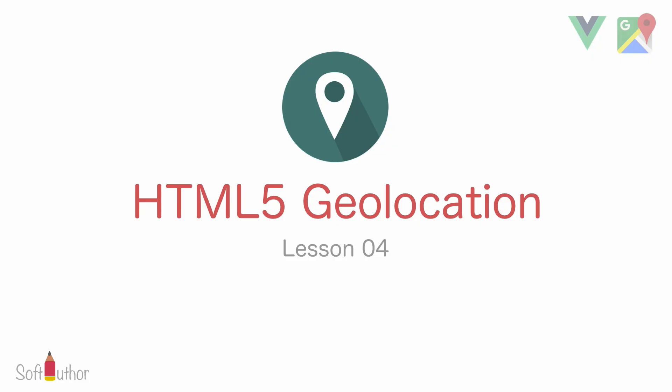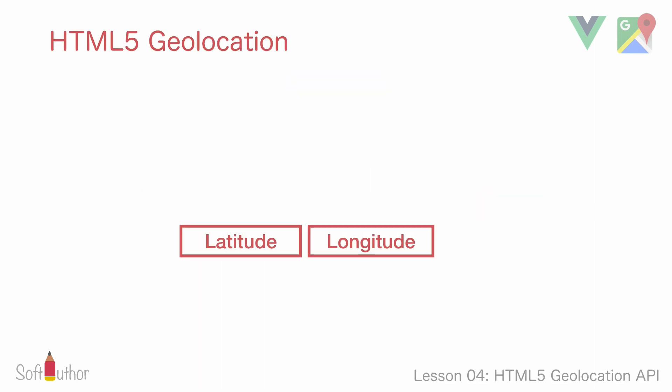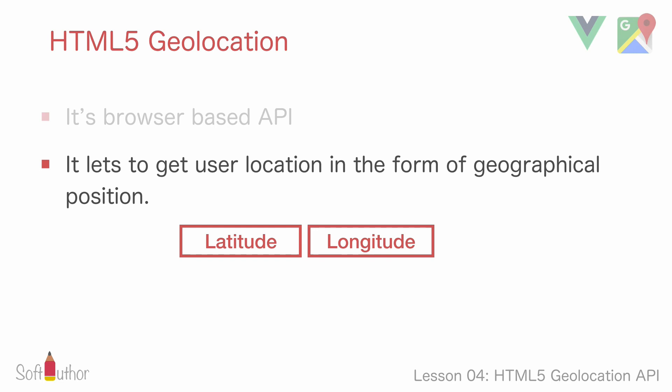Welcome back. In this lesson I'm going to be talking about HTML5 geolocation — how to get latitude and longitude from this geolocation API. HTML5 geolocation is a browser-based API which basically lets us get the user's location in the form of coordinates, which are latitude and longitude.